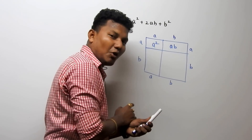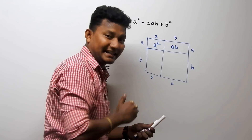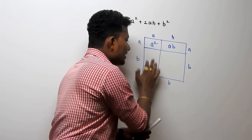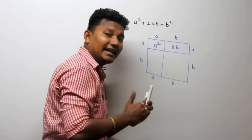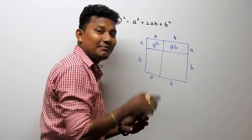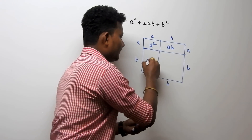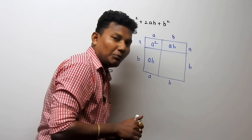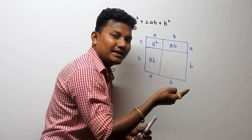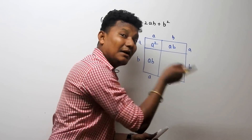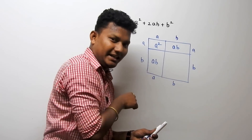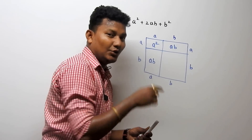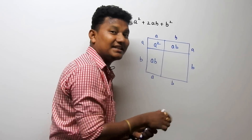Focus on the third box. It is also a rectangle, so its area is length times breadth, which is again 'a' and 'b', giving a times b. Focus on the fourth box — it is a square with side 'b', so its area is b squared.